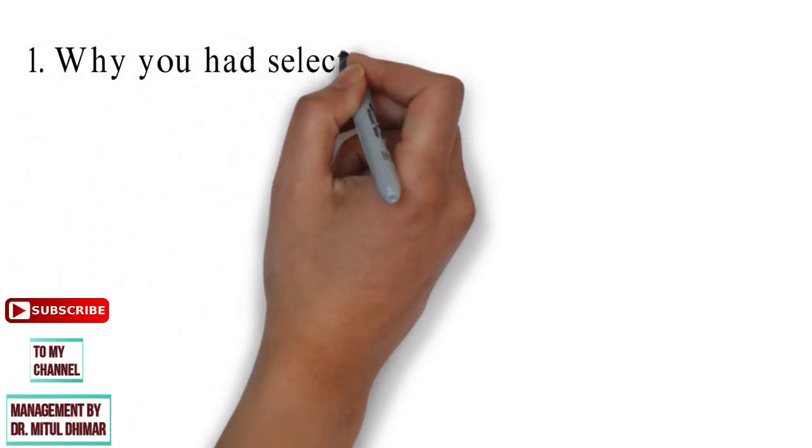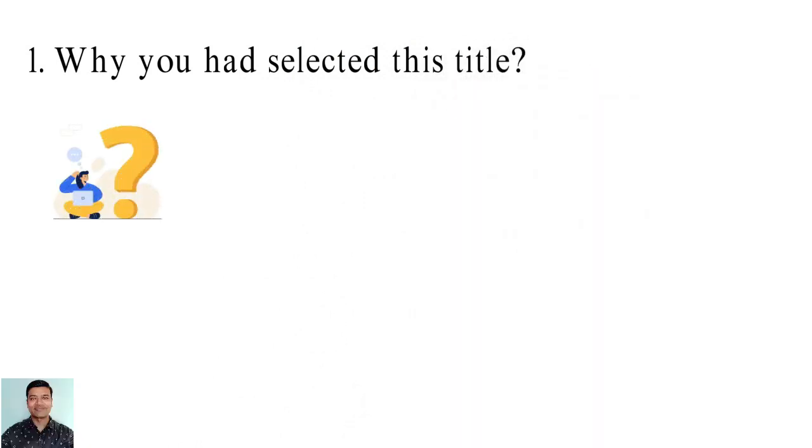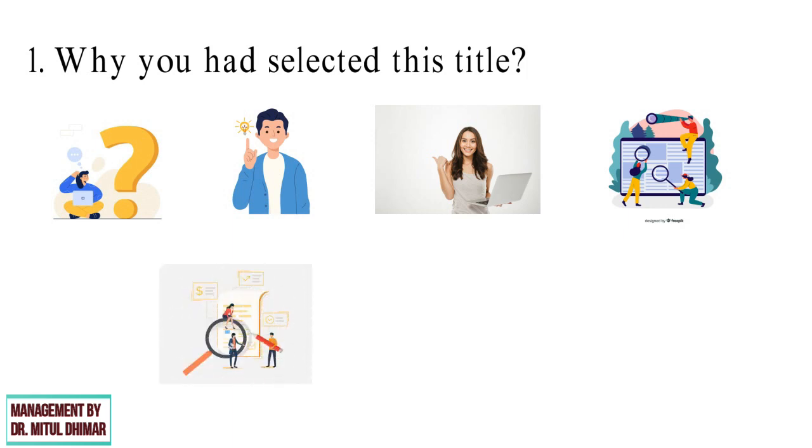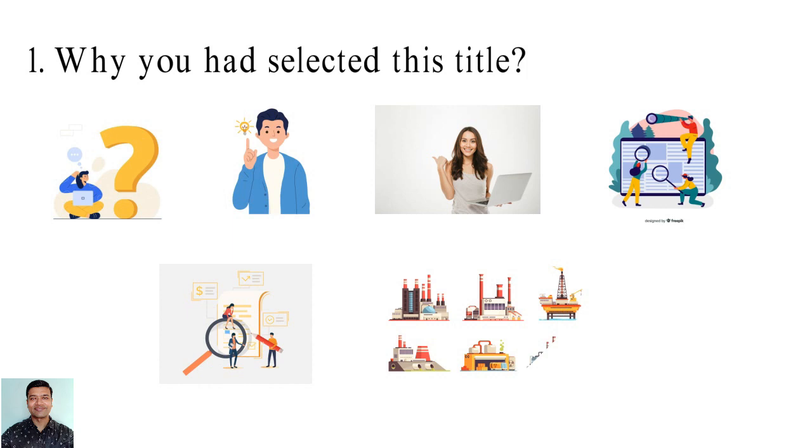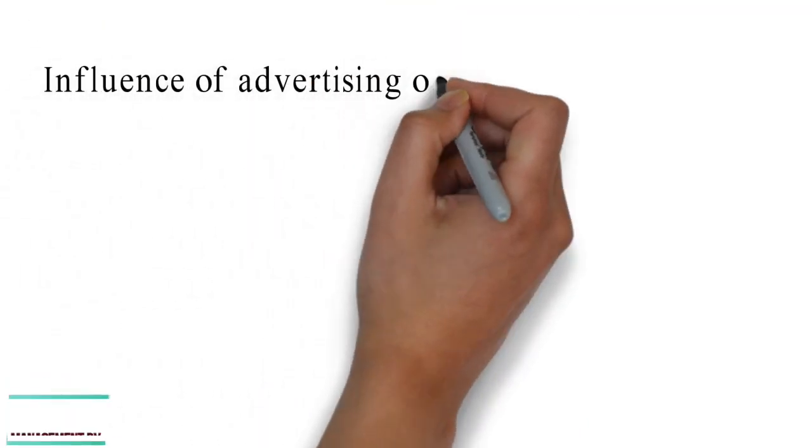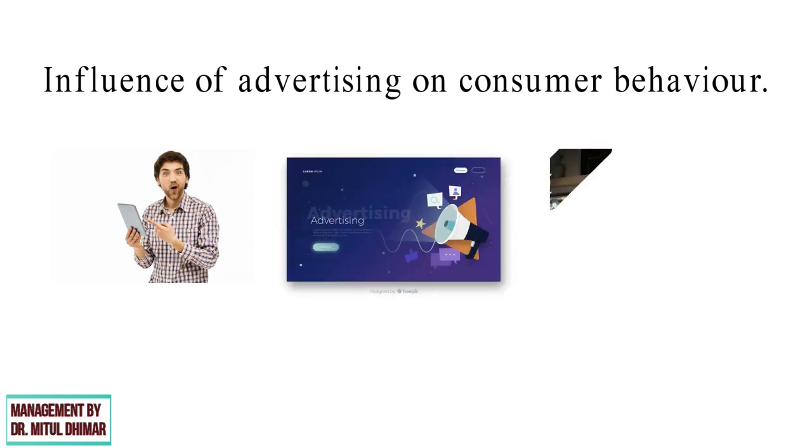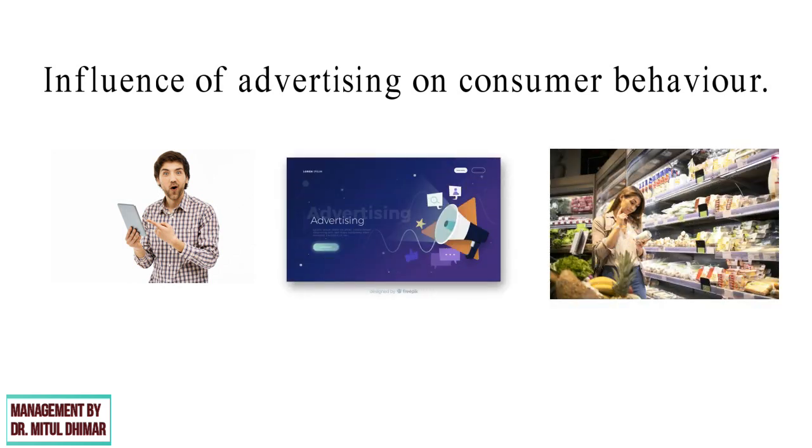Question number 1: Why you had selected this title? This is one of the common questions asked in viva. So in reply you can answer as per your research project title that this is your area of interest and you want to do more research on that topic. In this you can say that more research is possible in my topic and this research can help industry as well. For example, research title influence of advertising on consumer behavior. In this title you can say that my area of interest in advertising and I want to do research on advertising effect on consumer behavior.